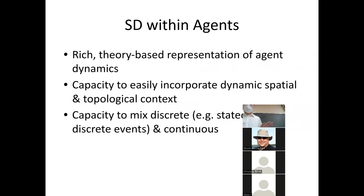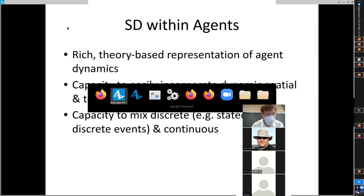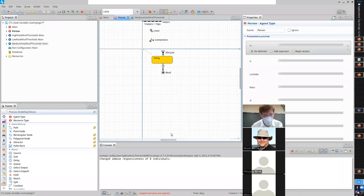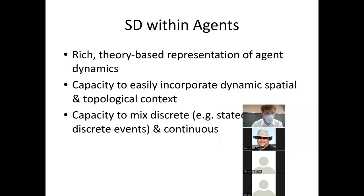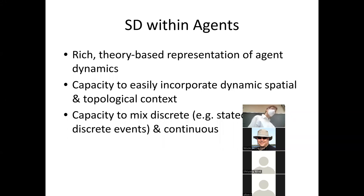System dynamics is great for allowing us to represent theory-based dynamics. There are many models based on differential equations that can be characterized with stocks and flows. We can capture agents' networks and spatial context using these kinds of hybrid models, mixing a continuous representation at an individual level with a discrete one — such as death, where individuals disappear and are removed from the population. So we can capture a hybrid between continuous dynamics and discrete dynamics.